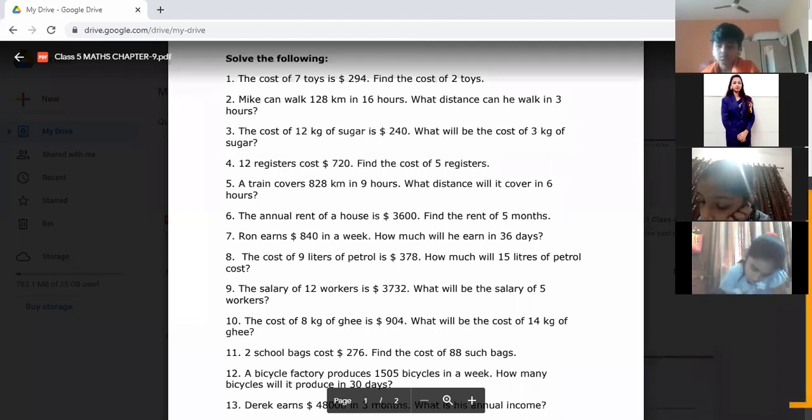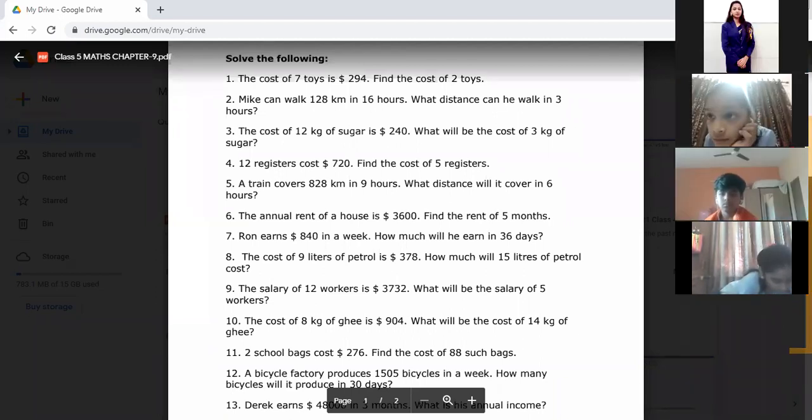The cost of 12 kg of sugar is 240, find the cost of 3 kg. First, how will we get the cost of 1 kg? What do you mean by the unitary method? Bhavya, what do you mean by the unitary method?